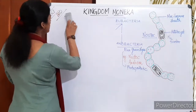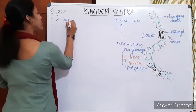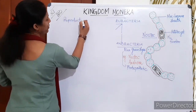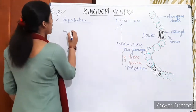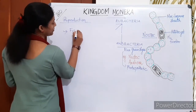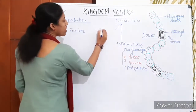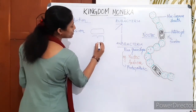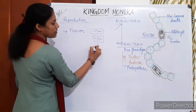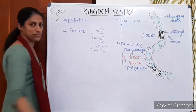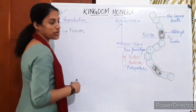Our next topic is reproduction in bacteria. The most common type of reproduction in Kingdom Monera is fission. In binary fission, one bacterium divides — the genetic material divides first — producing two bacteria.